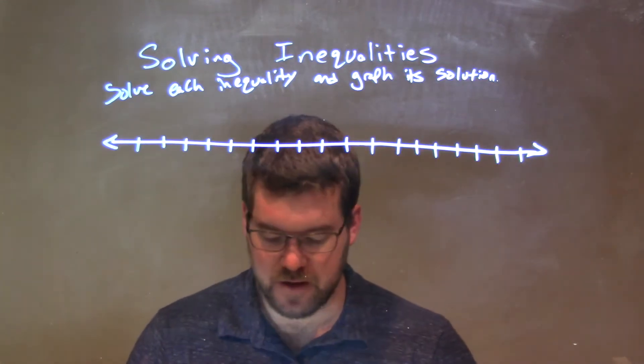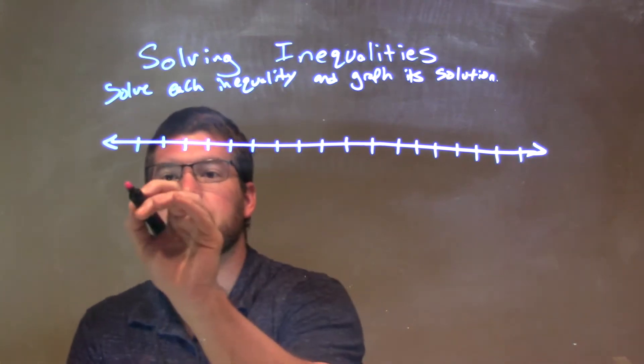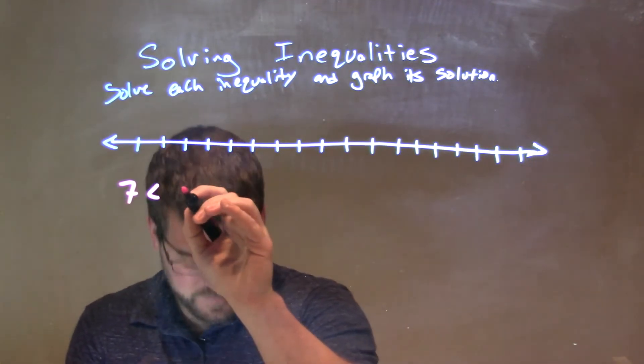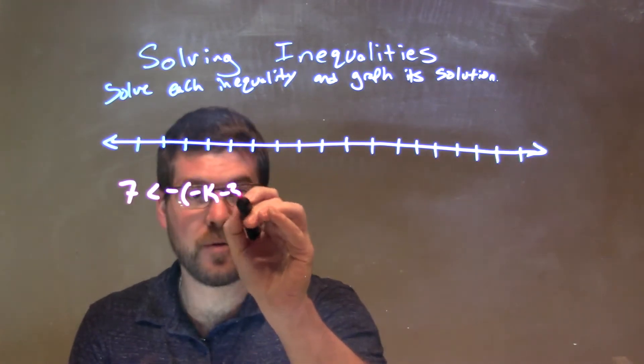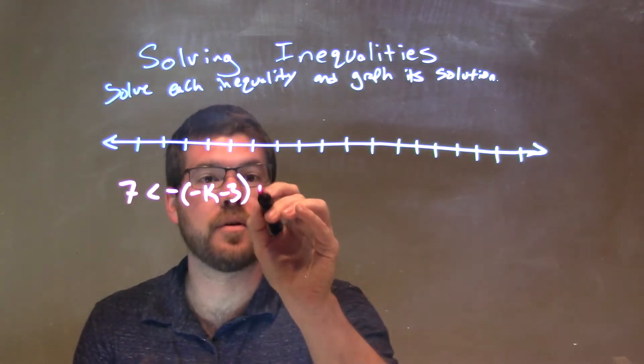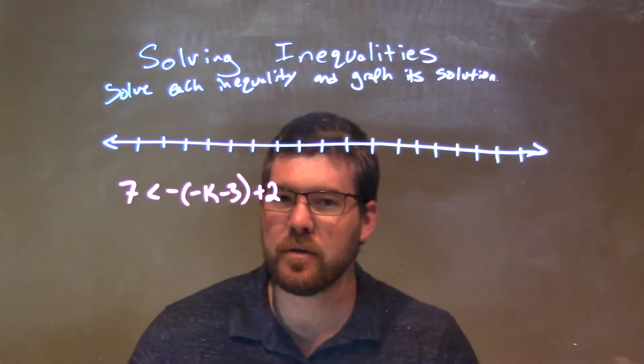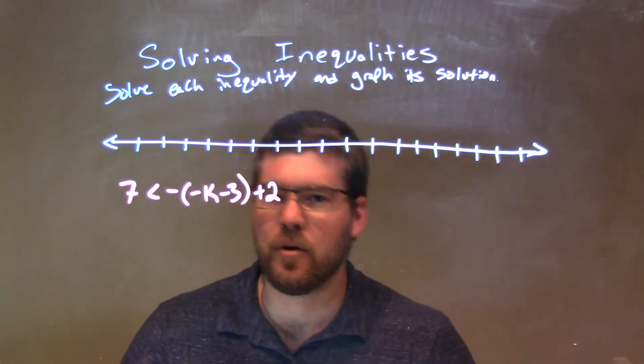If I was given this inequality: 7 is less than negative times negative k minus 3 in parentheses, plus 2. Now this one's a little tricky, so let's be careful here.